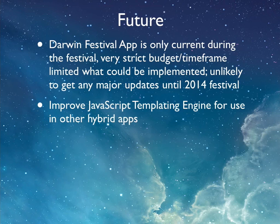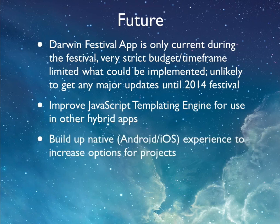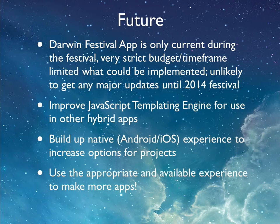I'd like to improve my templating engine so I can use it in other apps. I still want to build up my native experience too, so that I've got choices — rather than saying one platform is the only way, I can say I can do it on Android, I can do it on iOS, and I can do a hybrid, and figure out which one's appropriate for the project. For instance, if you do a native app and all it is is web views, maybe that should be a hybrid app. But I'm not that experienced yet. Let's make more apps — and that's my talk.